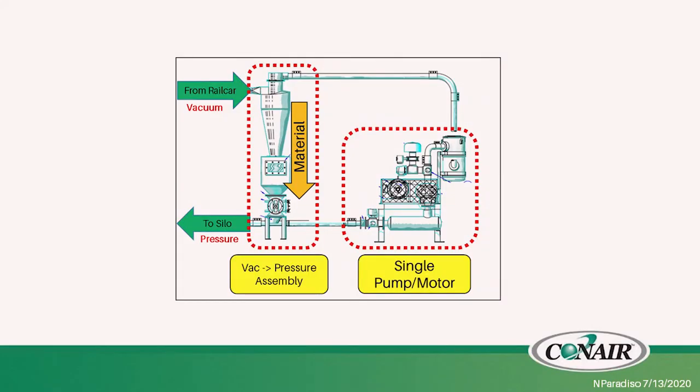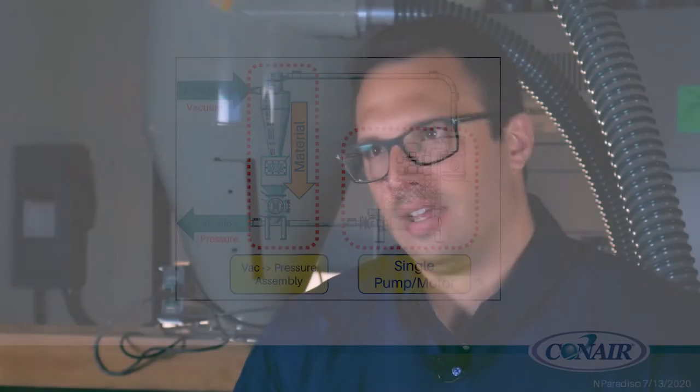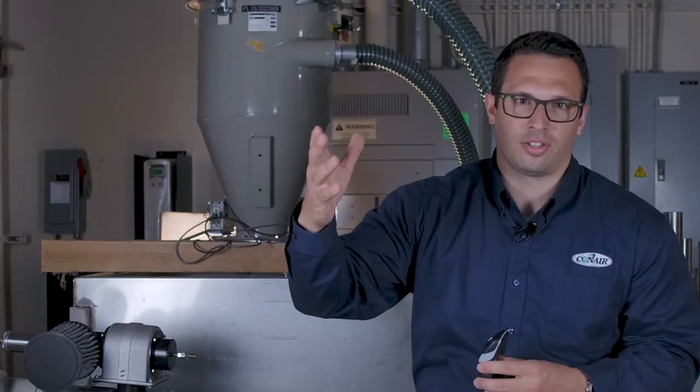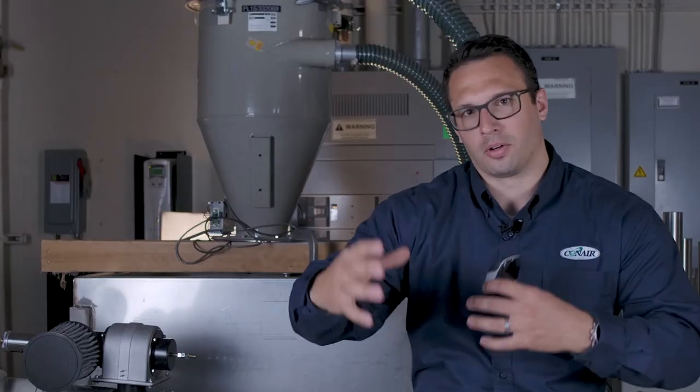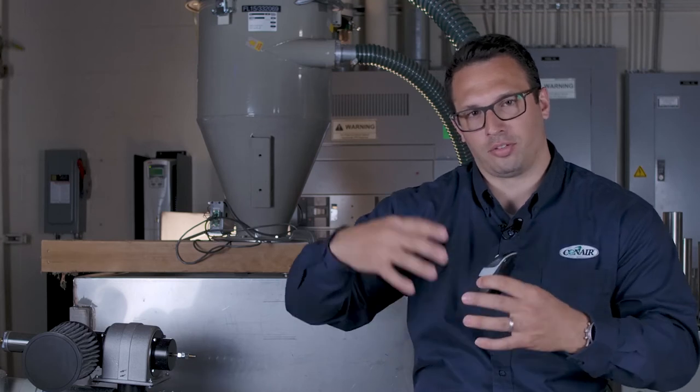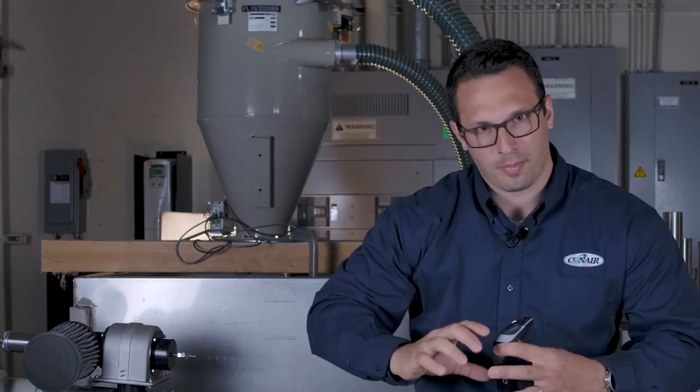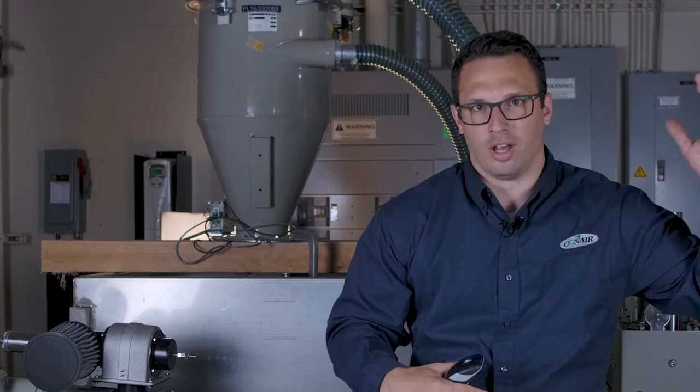What I've just put up on the screen here is a single pump, single motor system, where this pump is generating vacuum for the vacuum side of the system to pull the resin out of the railcars, conveys it over to what we call a vacuum to pressure transition assembly, which consists of a cyclone, an airlock assembly, because we're converting that pressure from a negative pressure to a positive pressure system. And then the positive side of that pump is going to pressure convey this material up from that location up into the silos or multiple silos based on the application.